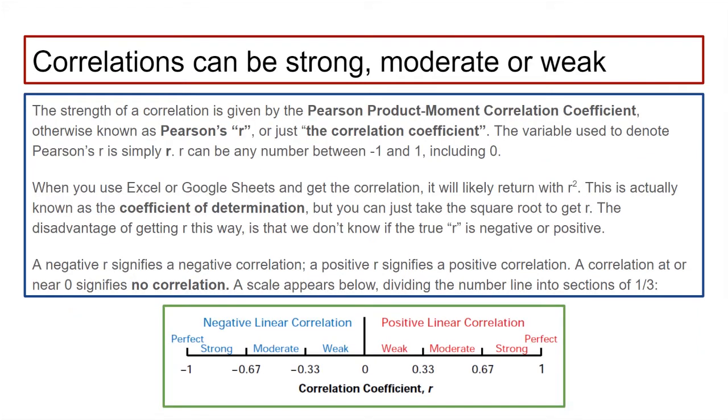Correlations are not just positive or negative, they can also be strong, moderate, or weak. You have a distinction between negative linear correlation and positive linear correlation. Zero just means no correlation, a one means perfectly positive, and negative one means perfectly negative. In between, the number line is divided into thirds. Zero to one third is weak, one third to two thirds is moderate, and two thirds to one is strong. The same is true going in the opposite direction.